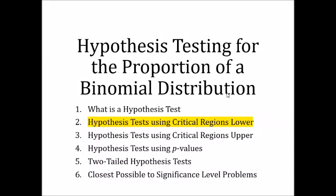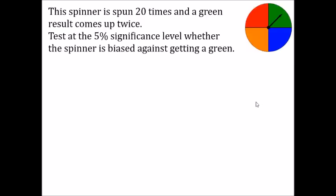Hello again folks. This is my second video on hypothesis tests for the binomial distribution. In this one we're going to look at how we use critical regions in what we call lower tail tests. We're going to use the same example from my introductory video, and as I mentioned in my last video we always need a significance level, often 5%, so in this question we're told to use a 5% significance level.